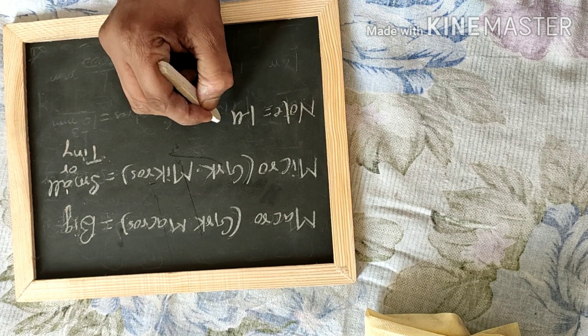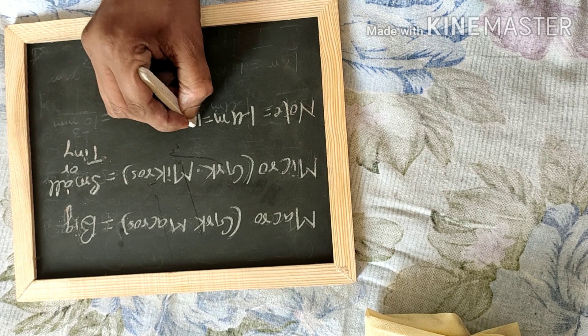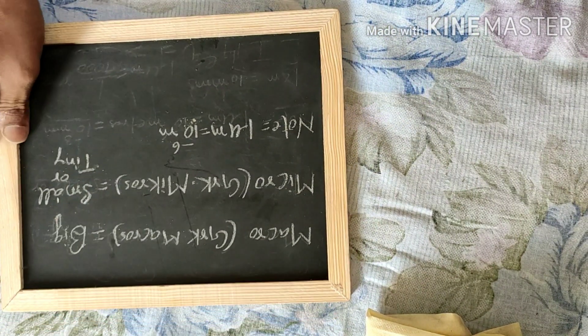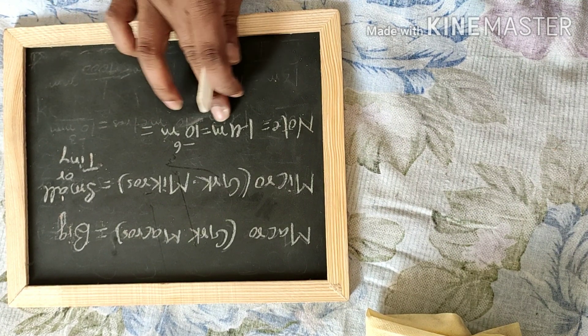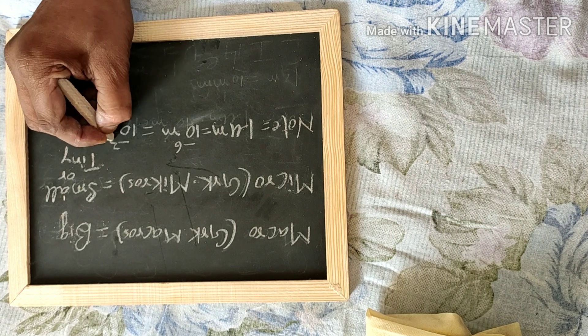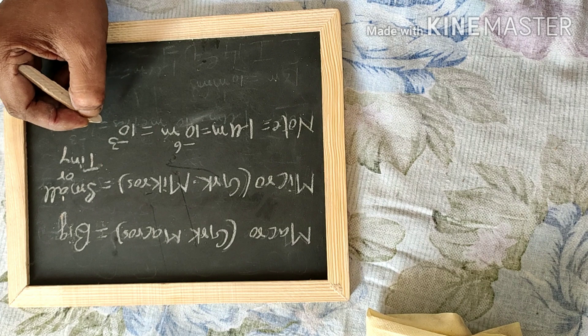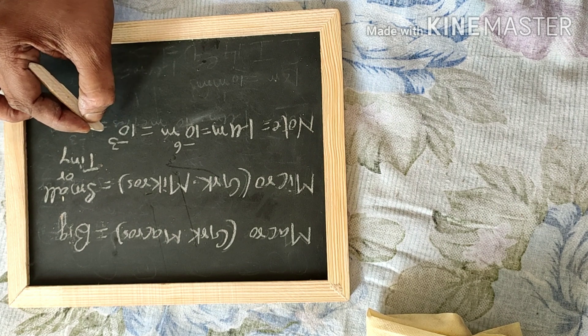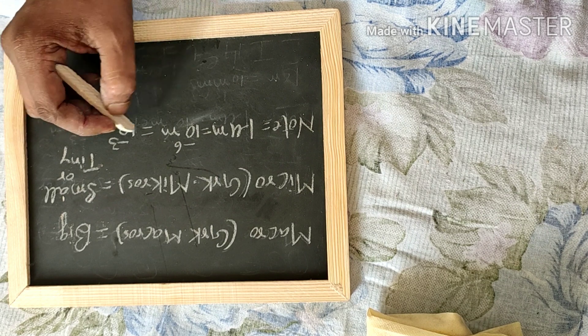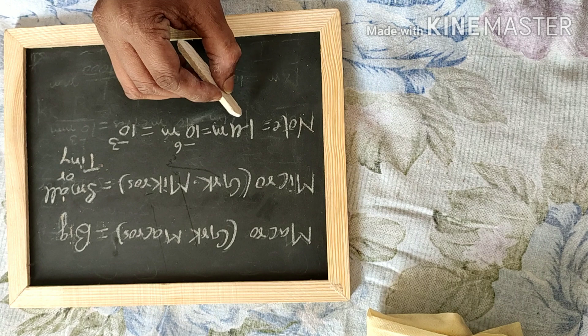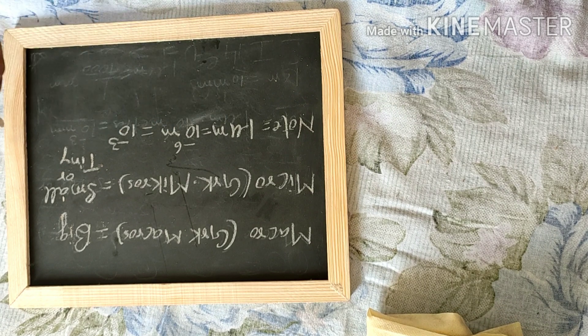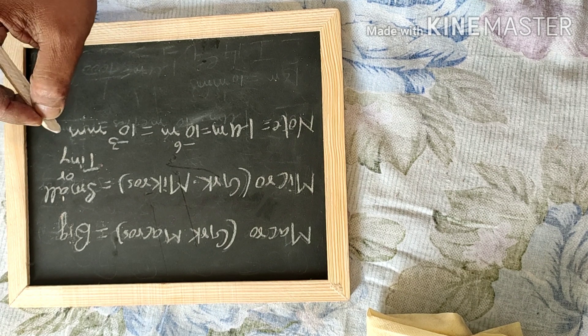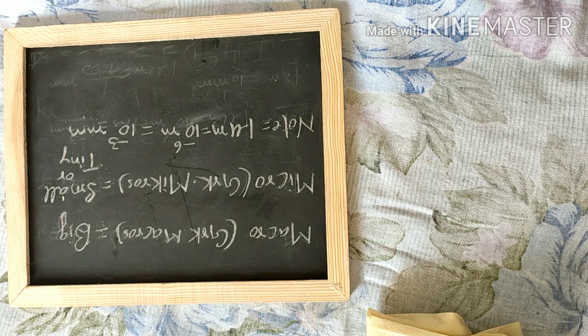My dear friends, point to be noted: one micrometer equals 10^-6 meter equals 10^-3 millimeter. So we read as 10 inverse 6, 10 inverse 3. One micrometer equals to 10^-6 meter and this equals to 10^-3 millimeter. So my dear friends, I have a question: what are microorganisms?